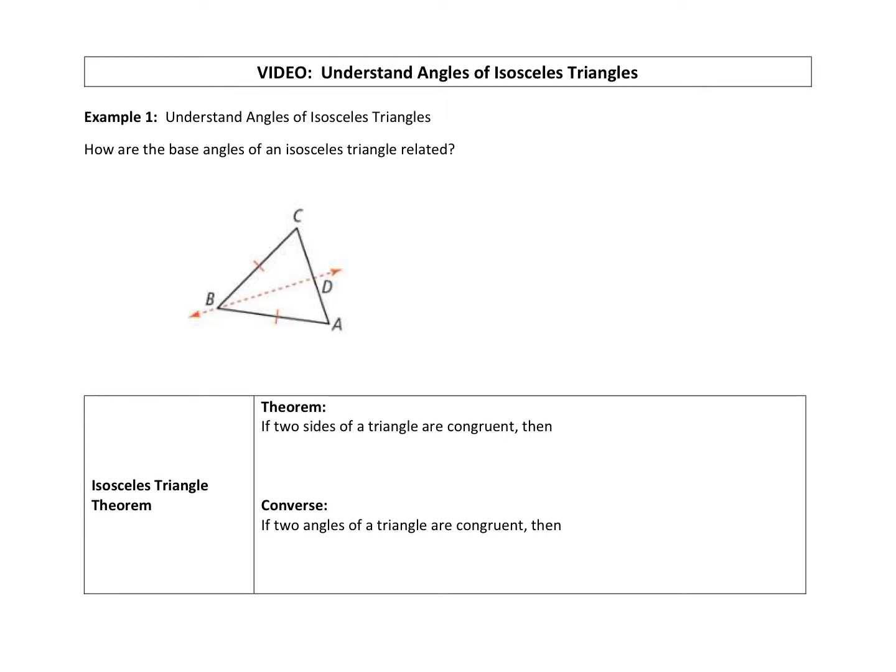Because we have congruent sides, the length was preserved. That means that there is a rigid motion that maps BC onto BA.